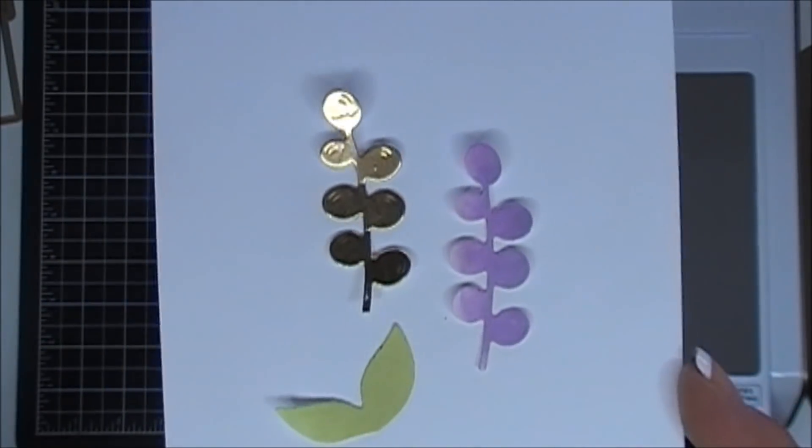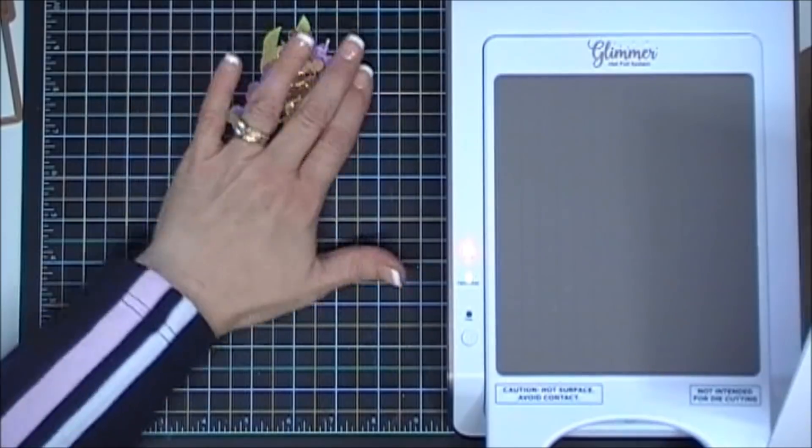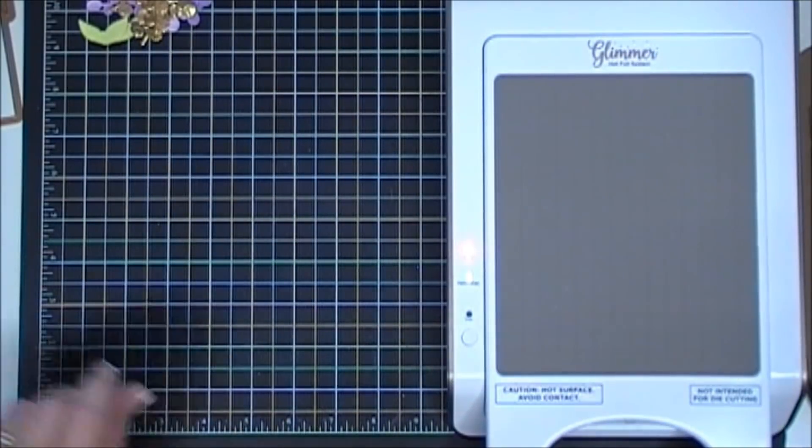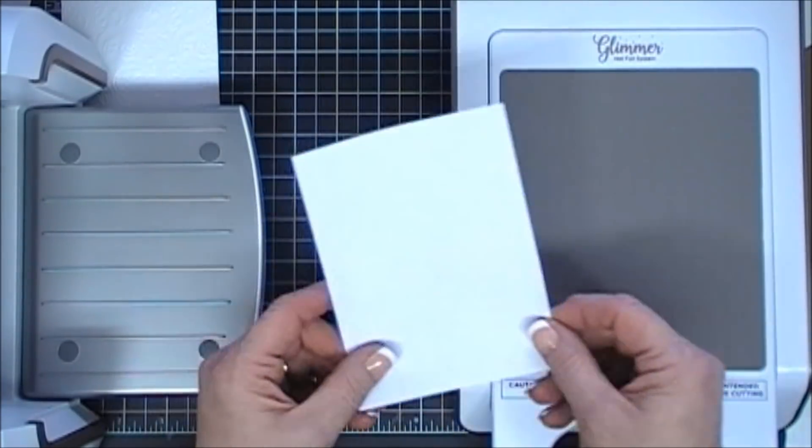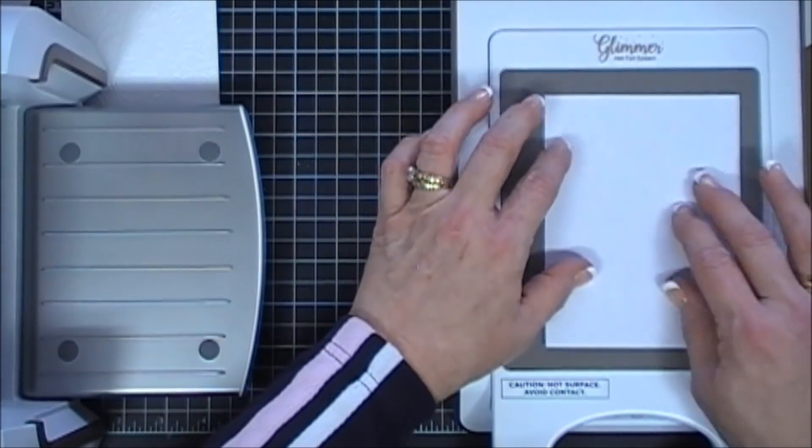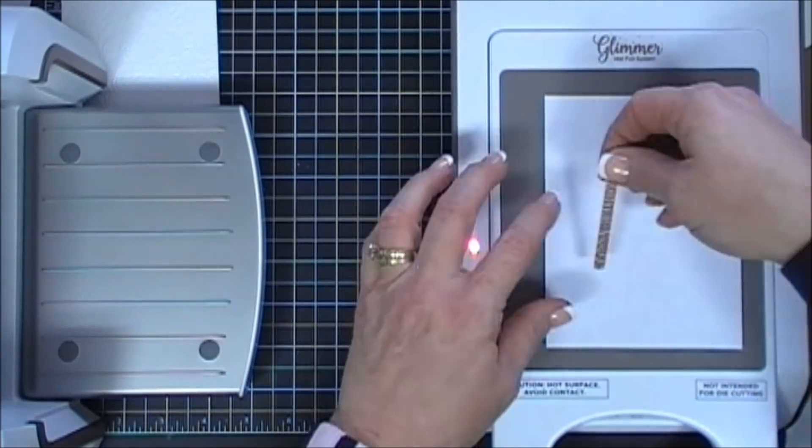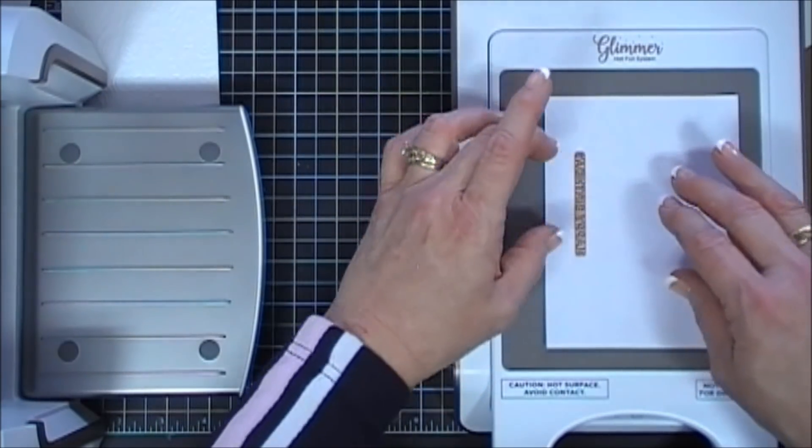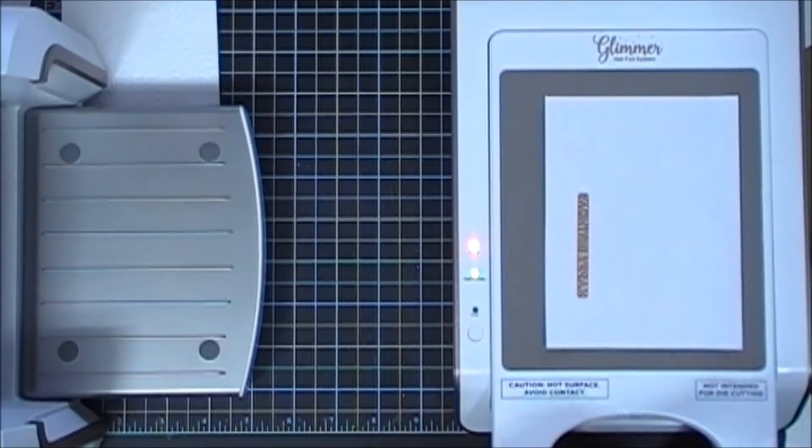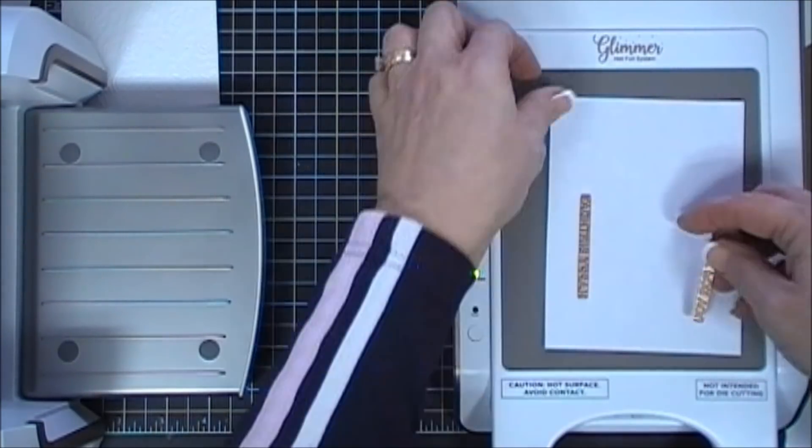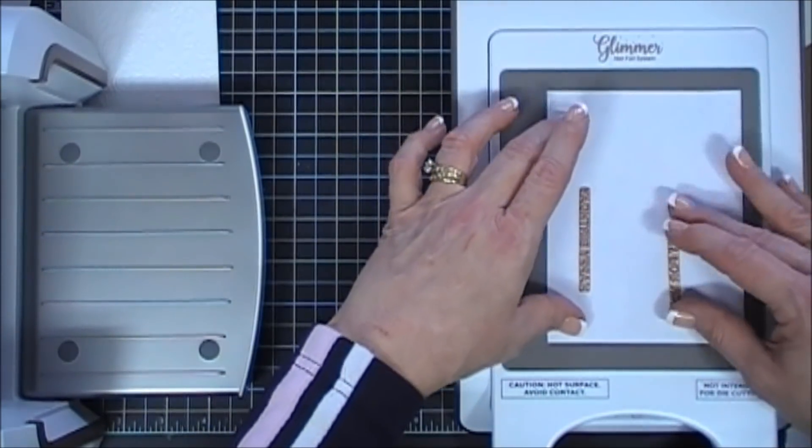I'm going to give you a close-up what they look like because these have embossed detail and they're so pretty. I thought the gold would bring out the gold foiling. Our glimmer machine is ready to go. I brought out my Platinum 6. What I like to do is take a piece of regular printer paper that's five and a half inches by four and a quarter and place that down on the base of my Glimmer Hot Foil system first.